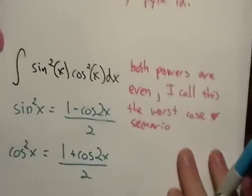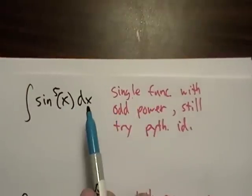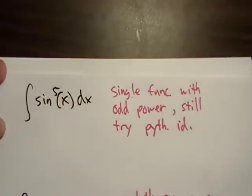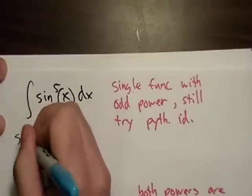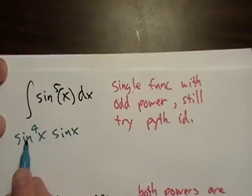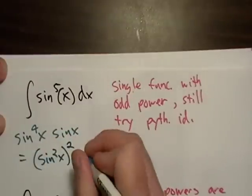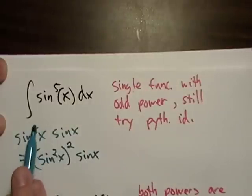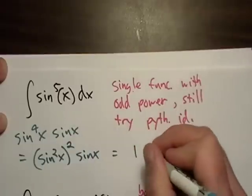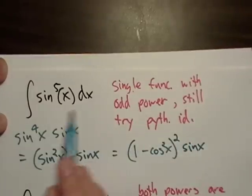The next scenario you could run into is possibly a single trig function with an odd power. Still, your best bet is probably the Pythagorean identity. What you'll want to do is go ahead and break this up, the sine five x business. You probably want to break that up into sine to the fourth x times sine x. Notice again I have that lone trig function sitting out there by itself. This will be sine squared x raised to the second power sine x. See how I did that? I just broke up the fourth power into two squares.